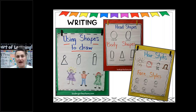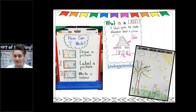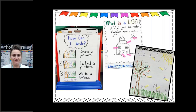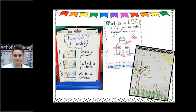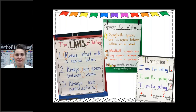Here are some writing anchor charts — different skills I cover in writing in kindergarten, especially at the beginning of the year. Students can always refer back to these at the writing station. Whether you're teaching using shapes to draw, hair styles, face styles, labeling, or writing expectations — it doesn't really matter what program you use. If you have an anchor chart to accompany whatever you're teaching, it's going to make a difference. My kids know my expectations for whenever they take out their writing journals.